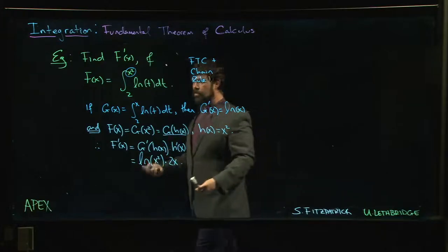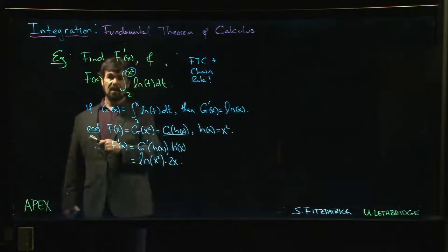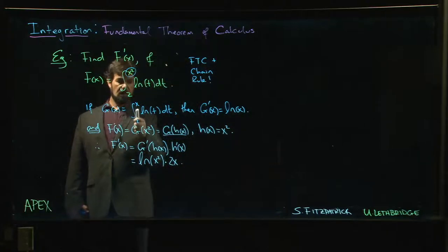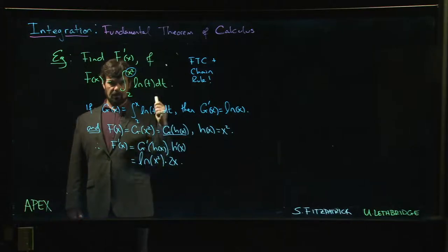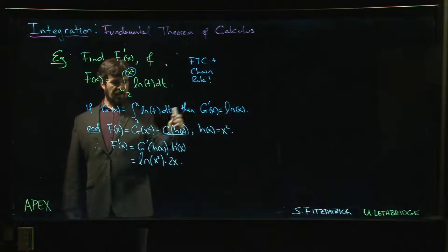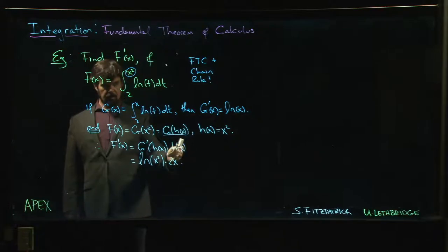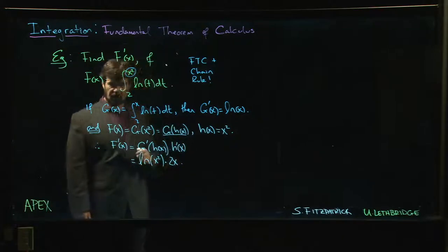So this is the idea: if you see something in that limit of integration other than x—you see some function of x—there's probably going to be chain rule involved. So slow down, be careful, identify functions if you have to, like we did here, and then you'll have the answer.